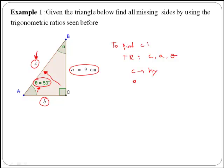Now, a is the side opposite to theta, therefore the trigonometric ratio relating both is actually sine of theta, which is opposite side over hypotenuse.